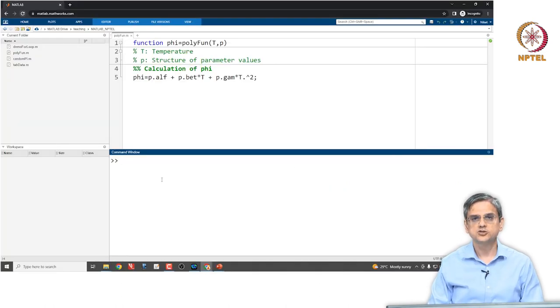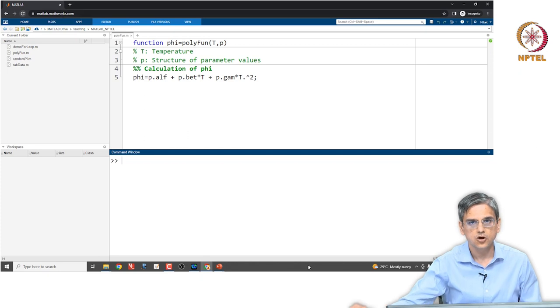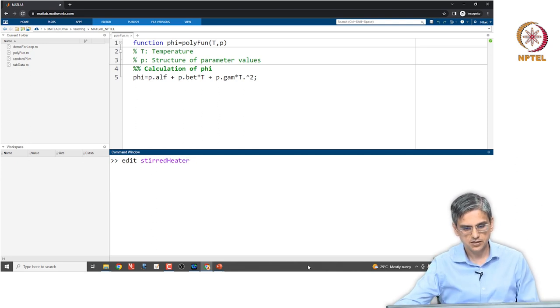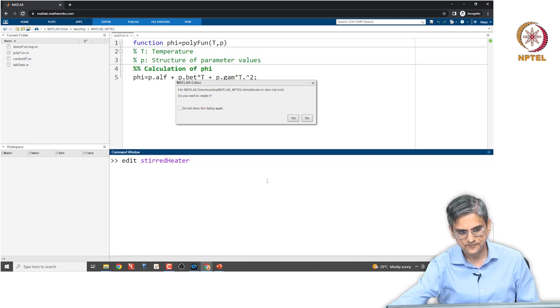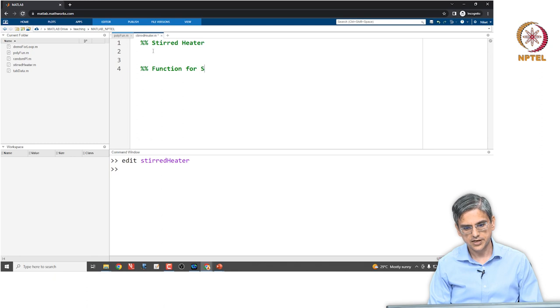Let us go to MATLAB and try to solve this problem. We will try to solve this problem using the online version of MATLAB. The website is matlab.mathworks.com and at least in 2023, right from 2016 until 2023 and hopefully in future as well, you will have access to MATLAB online version courtesy of MathWorks. Let us edit stirred heater, that is the name of the file.